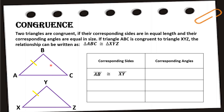Continuing the corresponding sides: side BC is congruent to side YZ, and side AC is congruent to side XZ.